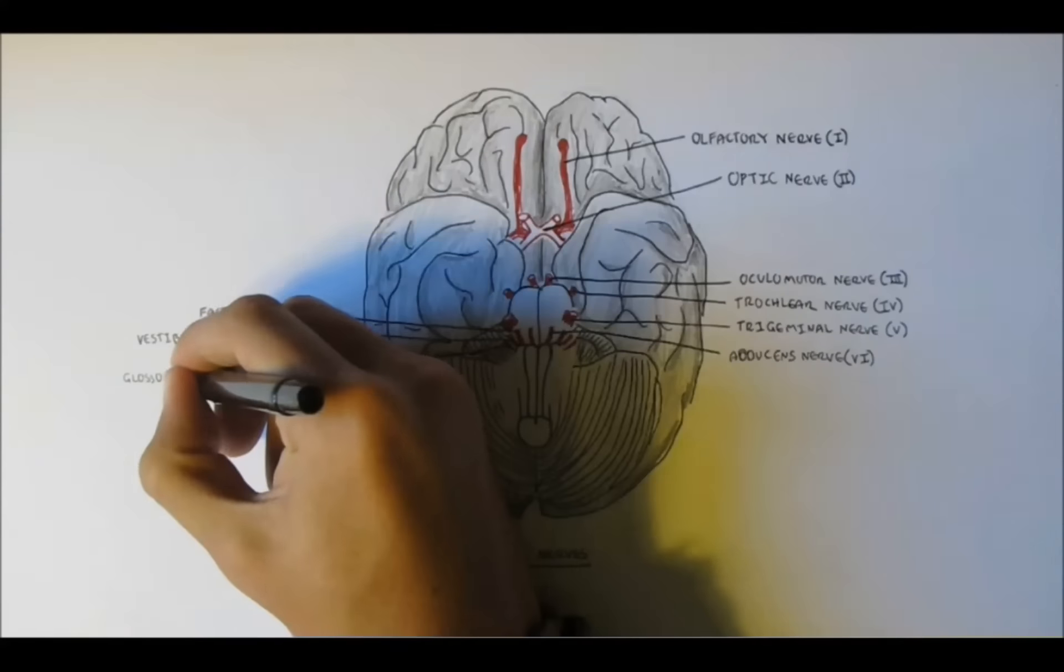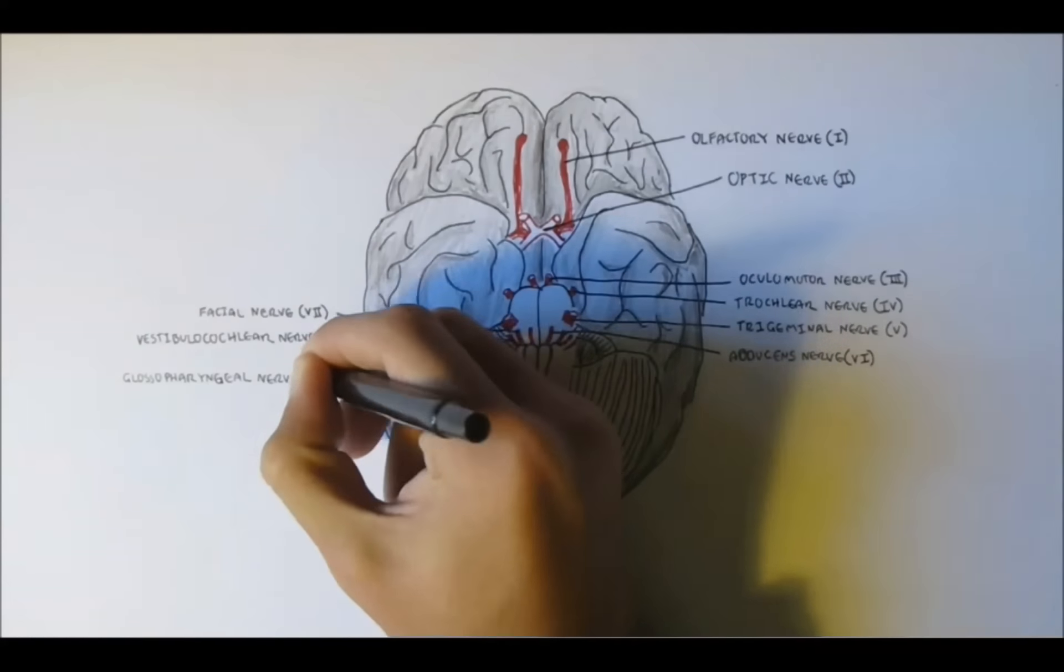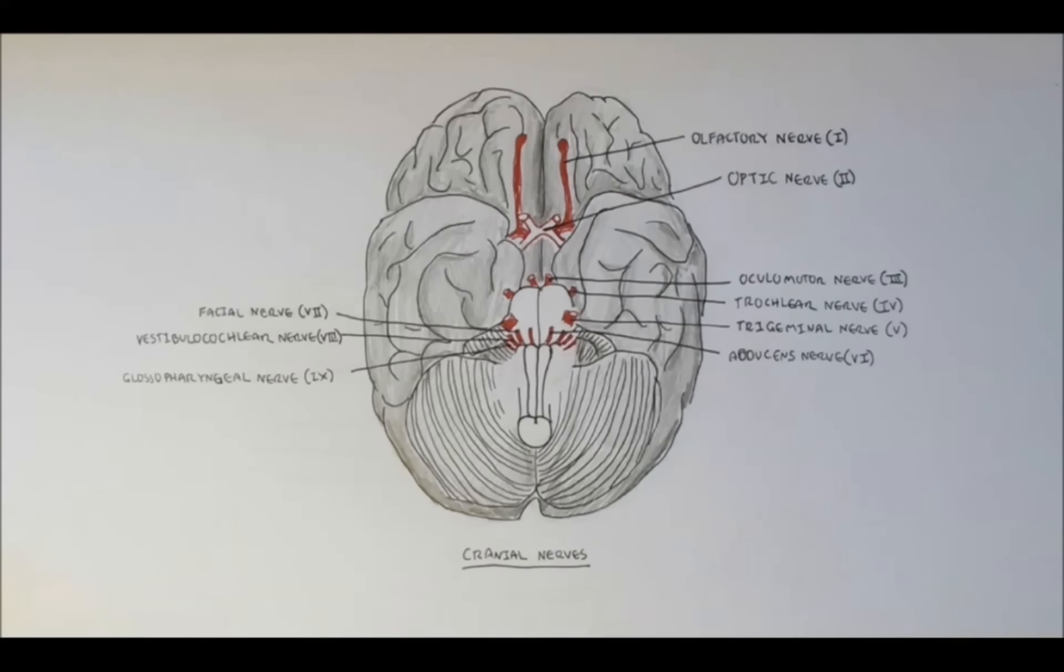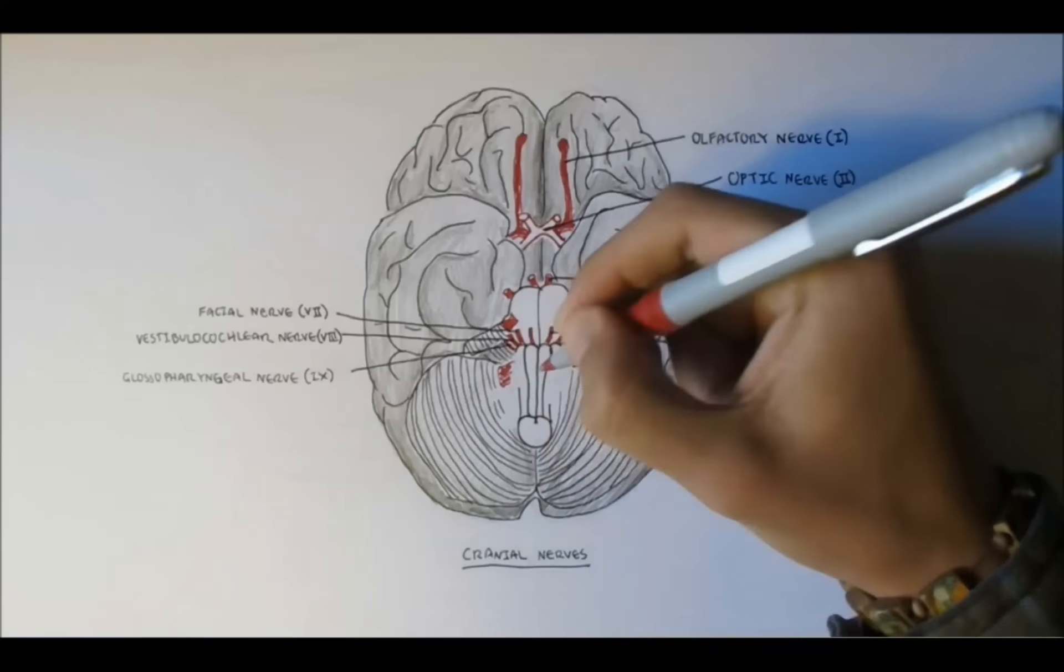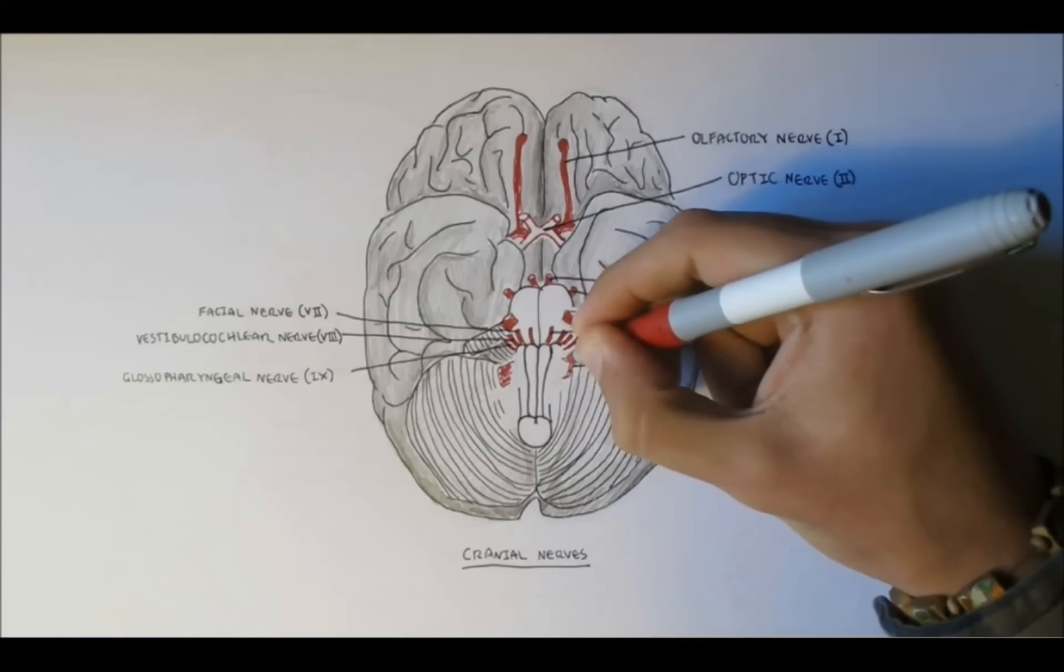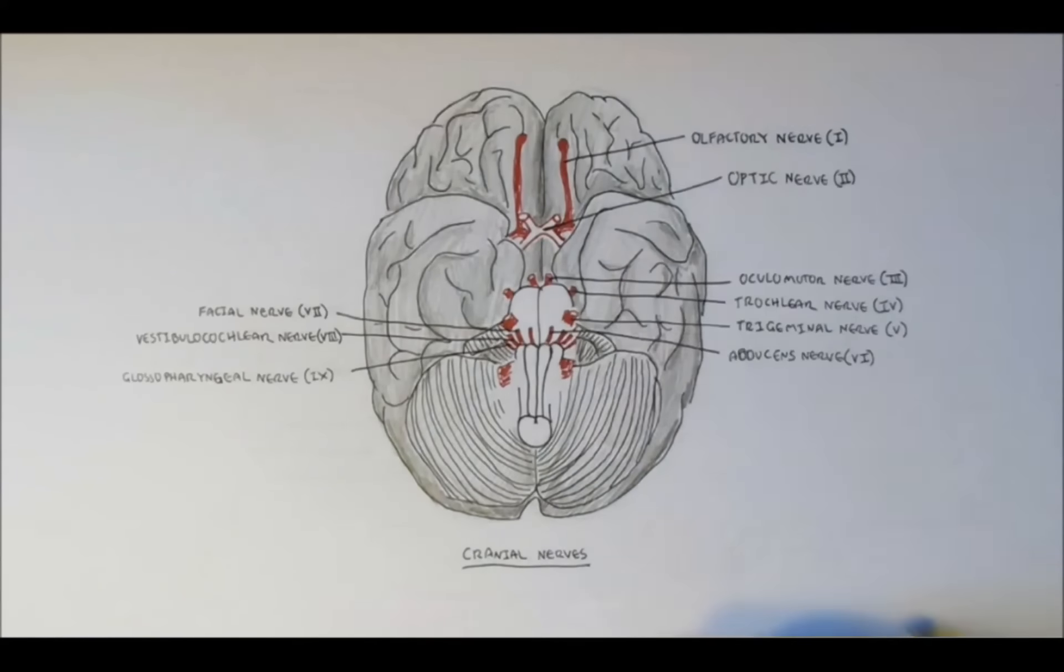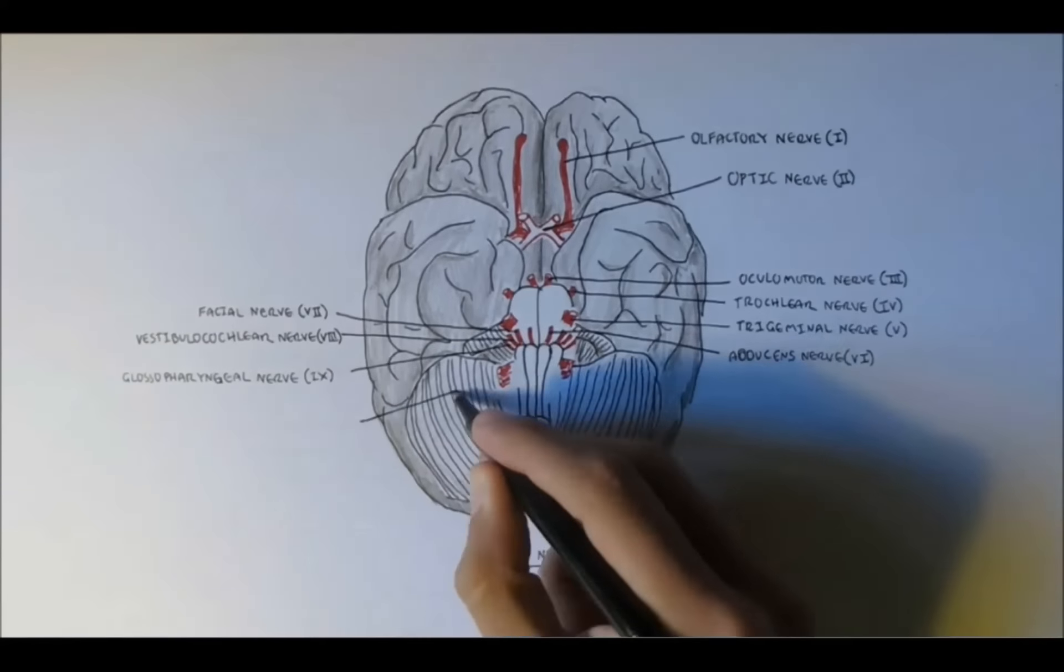So here is the glossopharyngeal nerve, nerve 9. Nerve 10 is the vagus nerve, which has many functions in our parasympathetic nervous system, and it arises also from the medulla oblongata.